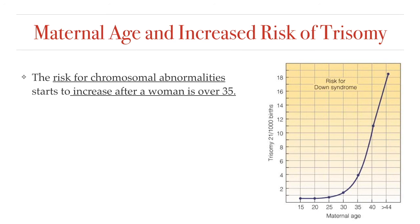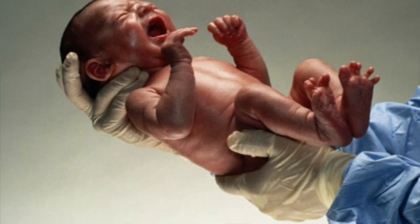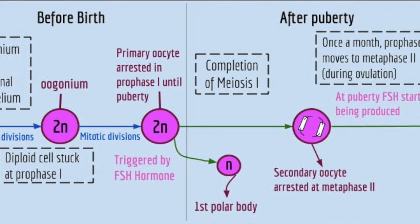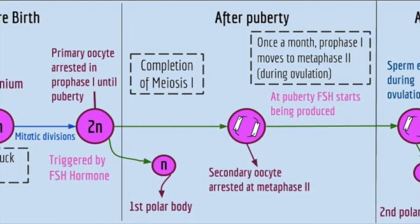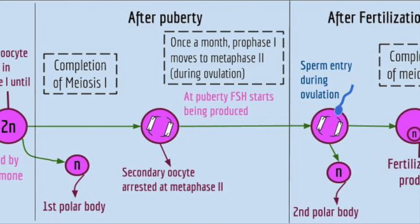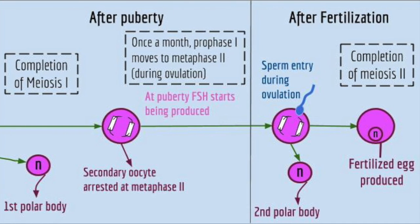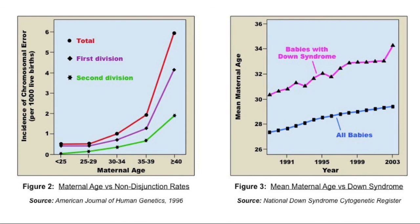The risk for Down syndrome, for example, is 1 in 1,000 births if the mother is 30 years old. If the mother is 35, the risk is higher at 1 in 385 births. By age 40, the risk is 1 in 100 births — ten times higher than the risk at age 30. By age 45, the risk is as high as 1 in 30 chances. This is because every little girl is born with every egg she will ever produce already in her ovaries, halted in early meiosis. A 20-year-old woman has eggs that are 20 years old, and a 40-year-old woman has eggs that are 40 years old. With time, the chances of non-disjunction start to increase exponentially, especially after the age of 35.